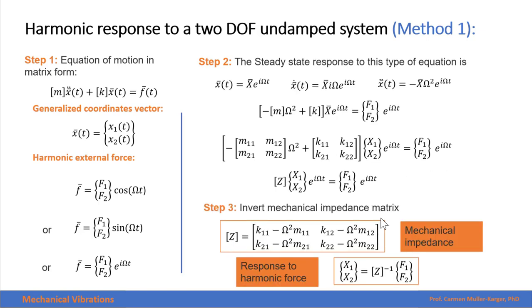This matrix is what is called the mechanical impedance matrix, and is a function of the properties of the system, which is the mass matrix and the stiffness matrix, and the forcing frequency. This equation right here represents then the amplitude of the response to harmonic force.